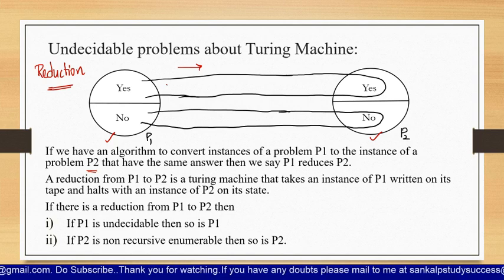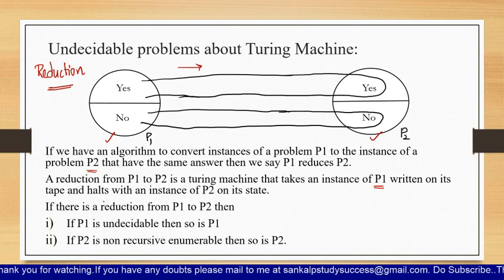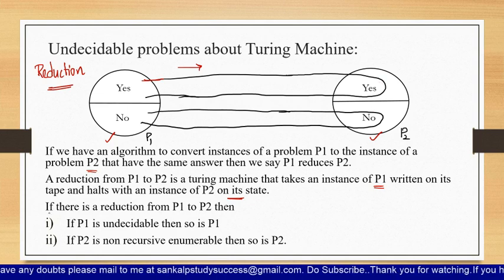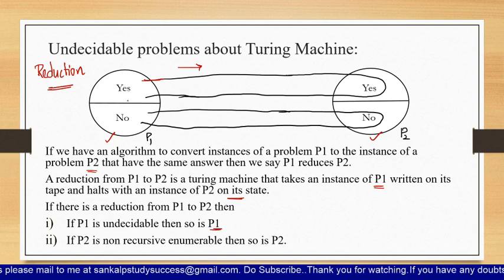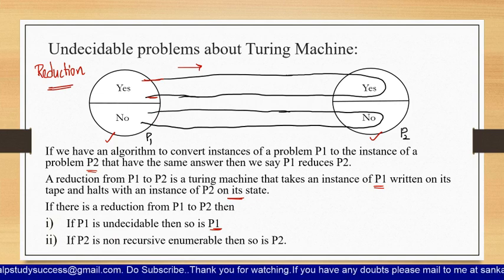A reduction from P1 to P2 is a Turing machine that takes an instance of P1 written on its tape and halts with an instance of P2 on its tape. If there is a reduction from P1 to P2 and P1 is undecidable, then so is P2. If P2 is non-recursively enumerable (undecidable), then again so is P2. This is about reduction and undecidable problems about Turing machines.